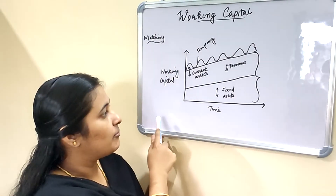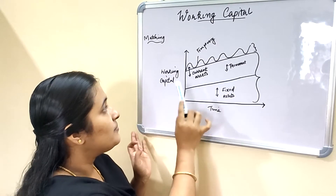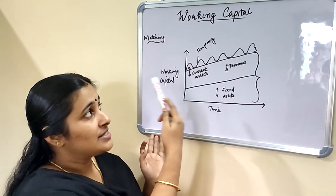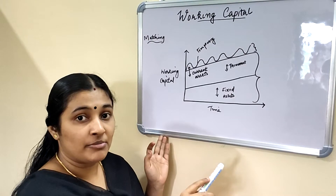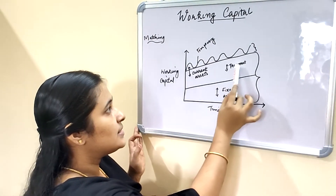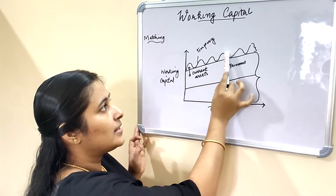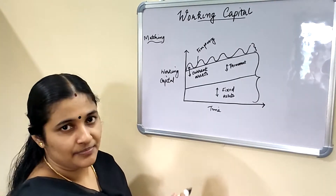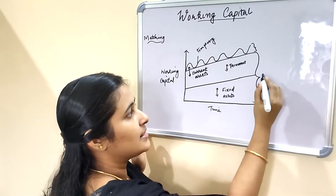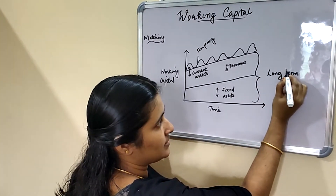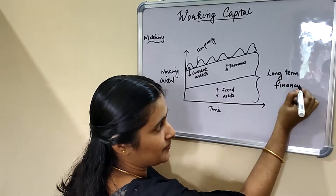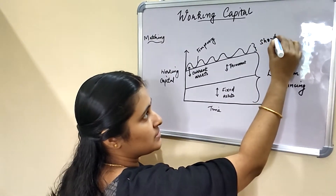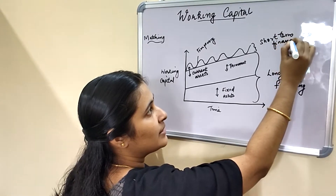Here, this is the time axis and this is the amount of working capital. This is the fixed assets level and these are the current assets. Current assets may be permanent and temporary. This is the permanent working capital level and this one is the temporary working capital. Permanent assets and fixed assets are financed through long-term sources of funds, while temporary assets are financed through short-term sources.